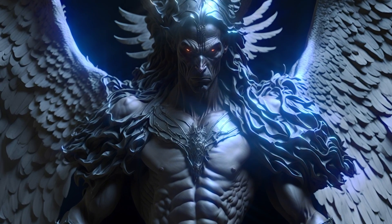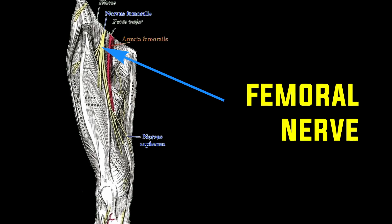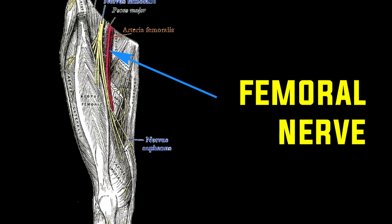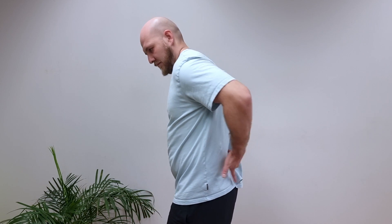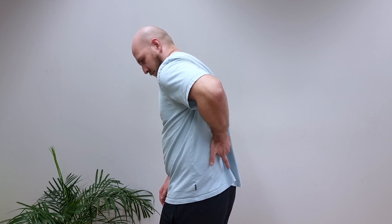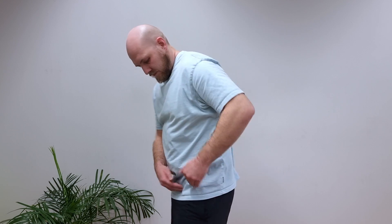Next let's test the lower body nerves. First we will show you how to test the femoral nerve, and after that comes the sciatic nerve — everybody's favorite nerve. The femoral nerve starts from the lower back at the L2-L4 segments, then comes to the front of the hip, innervating the hip and thigh area.